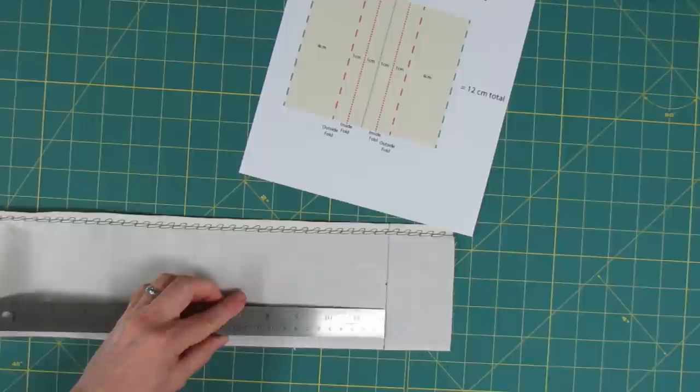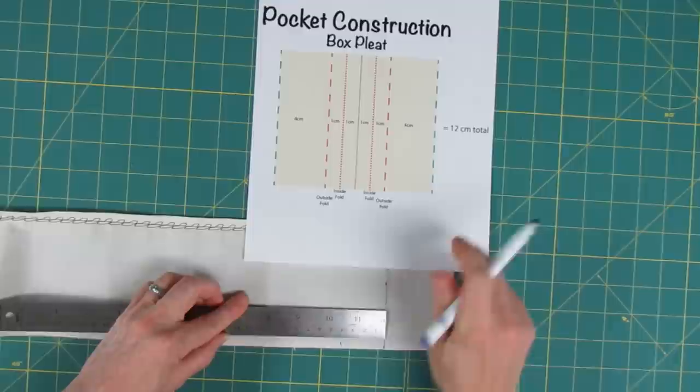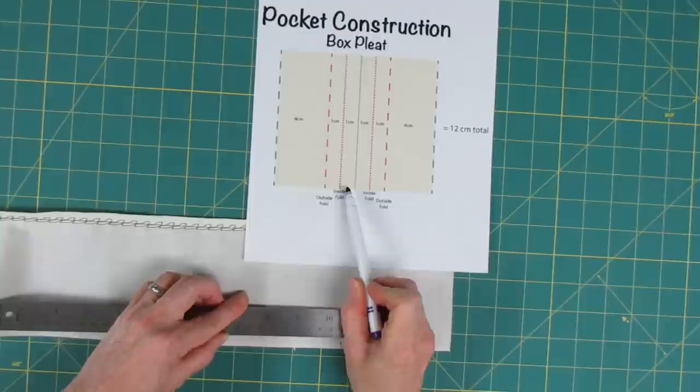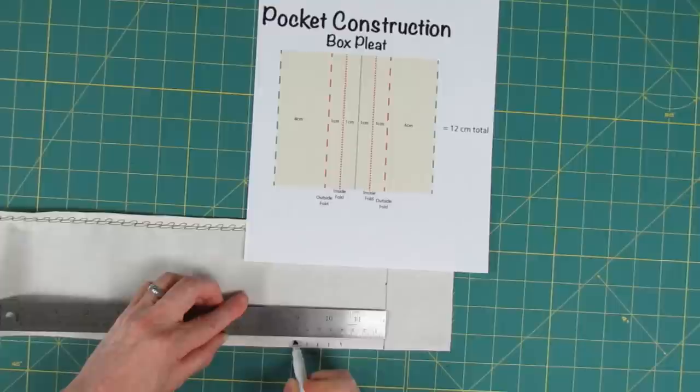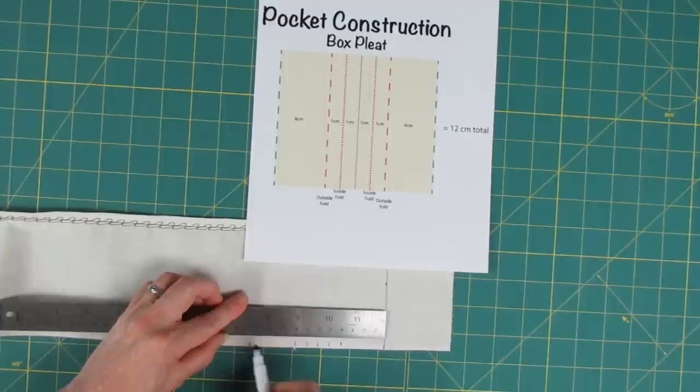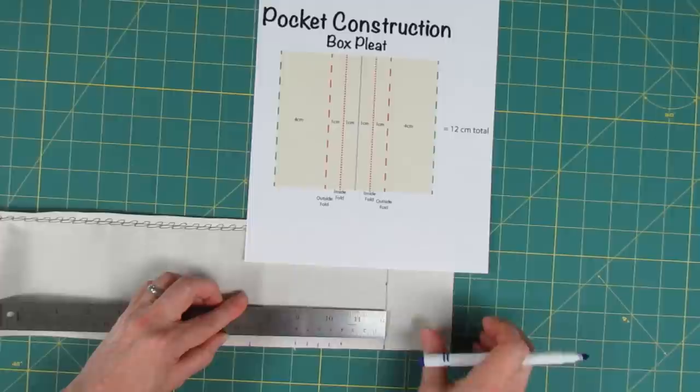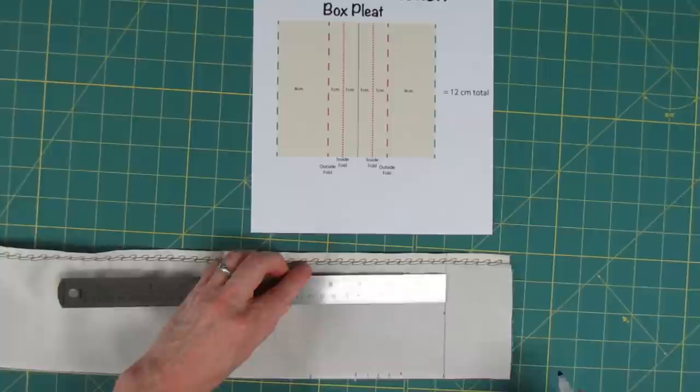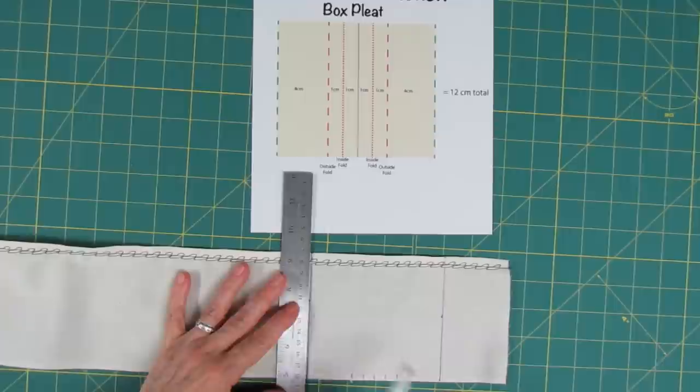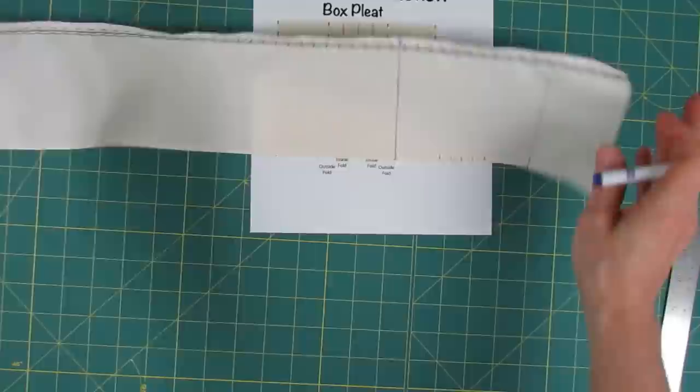Now following our diagram, we know that there is 4 cm, and then we have a series of 4 one cm marks. So I'll do 1, 2, 3, 4, and then 4 cm to the outside edge. And you'll see on the ruler that I'm at 12, and that's what the total is. Now I'm going to go ahead and mark 12 up here so that I can draw another line. There's one complete pocket.